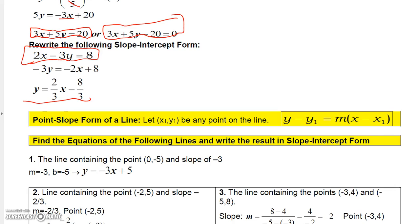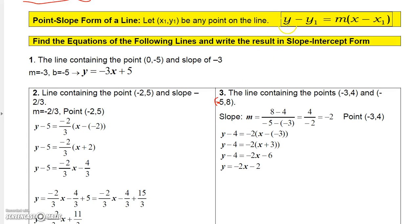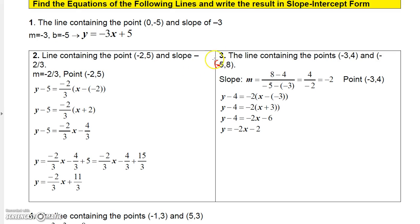Now, the point-slope form is useful when you're given a point the line goes through (that's not the y-intercept) and the slope. For example, find the line through points (negative 3, 4) and (negative 5, 8). First find the slope: take the y-values and x-values — (8 minus 4) over (negative 5 minus negative 3) equals 4 over negative 2 equals negative 2. So the slope is negative 2.